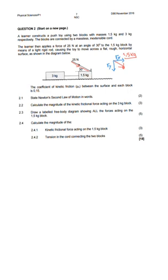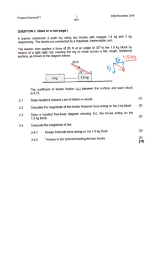The force of 25 newtons at an angle of 30 degrees acts on the 1.5 kg block by means of a light, rigid rod, causing the toy to move across a flat, rough, horizontal surface as shown in the diagram. The coefficient of kinetic friction, μk, between the surface and each block is 0.5, meaning the coefficient is the same for both blocks.